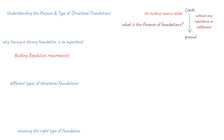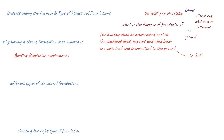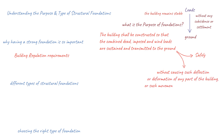Building Regulation Requirements: Section 2E of Part A1/2 of the Building Regulations focuses on foundations and states that the building shall be constructed so that the combined dead, imposed and wind loads are sustained and transmitted to the ground safely and without causing such deflection or deformation of any part of the building, or such movement of the ground as will impair the stability of any part of another building. The building shall also be constructed so that ground movement caused by swelling, shrinkage or freezing of the subsoil, or landslip or subsidence, will not impair the stability of any part of the building.